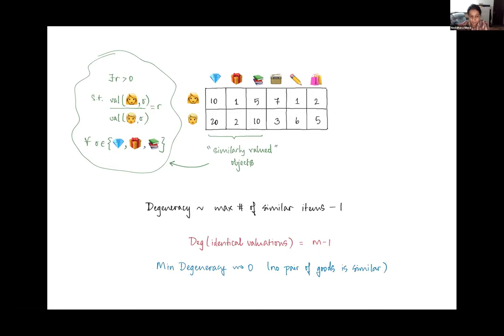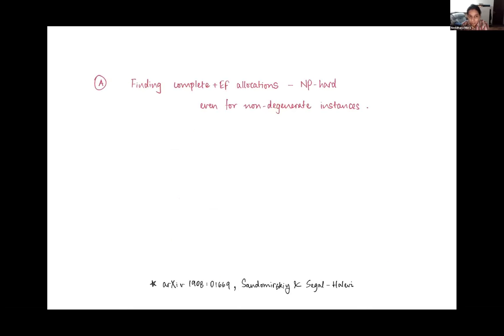On the other extreme, the degeneracy could be as small as zero when this happens when no pair of goods are valued in the same way by anybody.